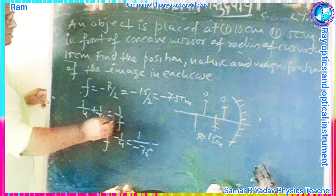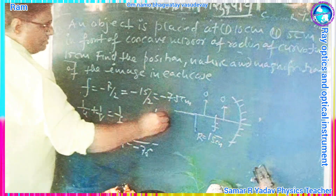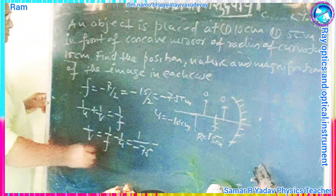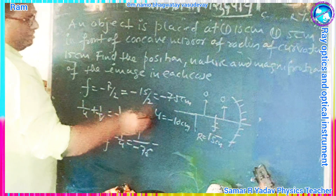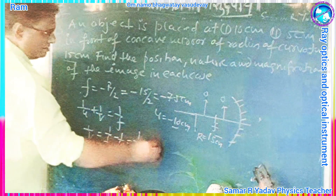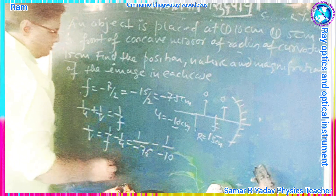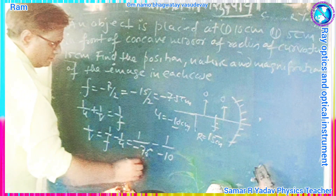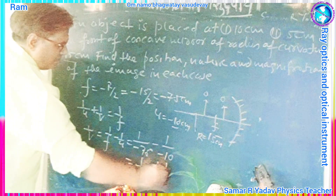Now for the first case, u is given as 10 cm, so u = minus 10 cm. Distance in the direction of the incident ray is taken as negative. Using the mirror formula, 1 upon V equals 1 upon F minus 1 upon u, which gives 1 upon 7.5 plus 1 upon 10.